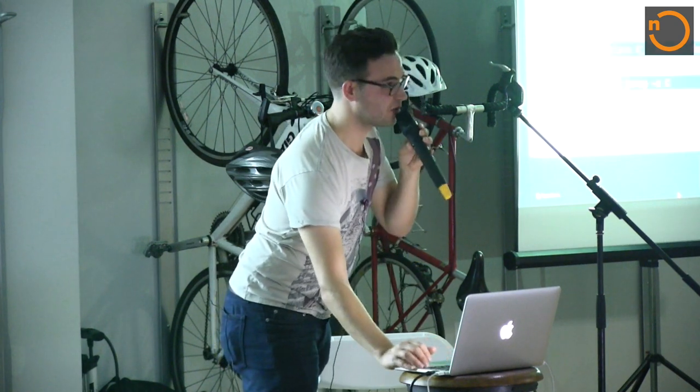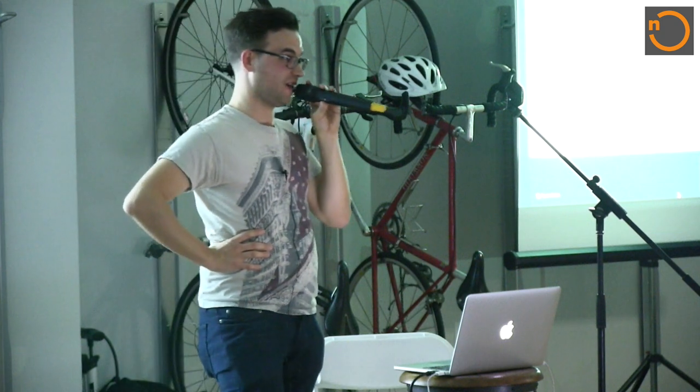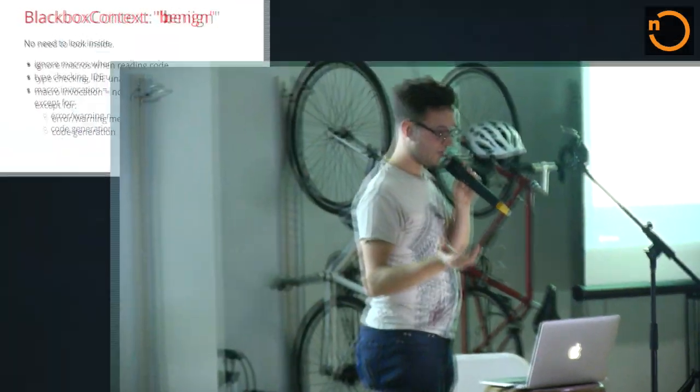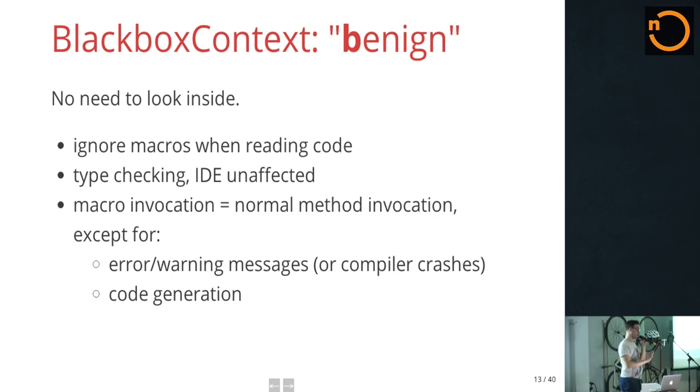Now we'll look at all the crazy stuff you can do. I promised I was going to explain more about what the black box context is. I think of it as a benign context — there's no need to look inside. What I mean by that is: someone is reading your code and there's a macro invocation. They know what's going on — it's just a method call. They don't need to understand the implementation of the macro. All they need to know is the signature of that method. The same holds for the IDE, for any tooling running on your code, incremental compilation, all that stuff. Black box macros are a constraint so they can't mess with the compiler, so that invariant is preserved. So whenever you can write a black box macro, make it a black box, please.